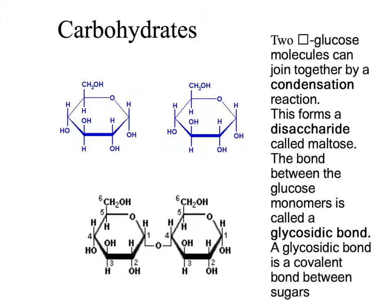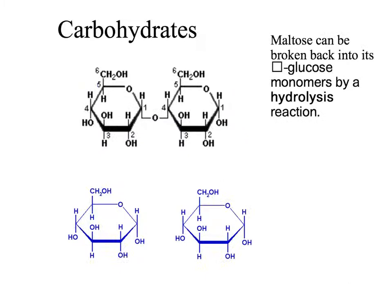When you have two monosaccharides such as alpha-glucose, they can join together by a condensation reaction, which involves the removal of water. This forms a glycosidic bond, which is a strong covalent bond. The two groups that react are the two OH groups, and the oxygen that's left forms part of the glycosidic bond. A disaccharide can also be broken back down into its monosaccharides by a hydrolysis reaction, which involves the addition of water to break the glycosidic bond and reform the OH groups.